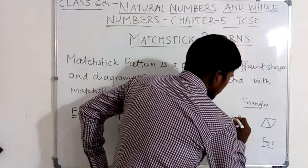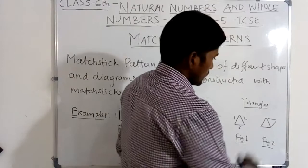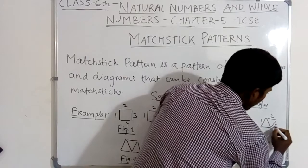Now in figure number 2, there are two triangles — one, two. So how many mastic are used? One, two, three, four, five. Five numbers of mastic are used.